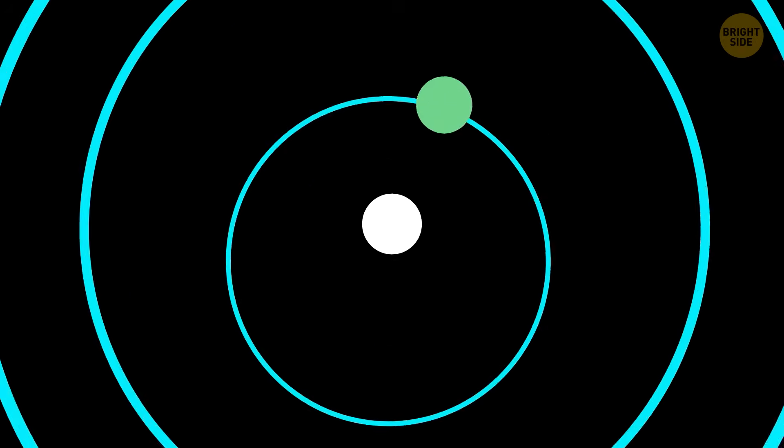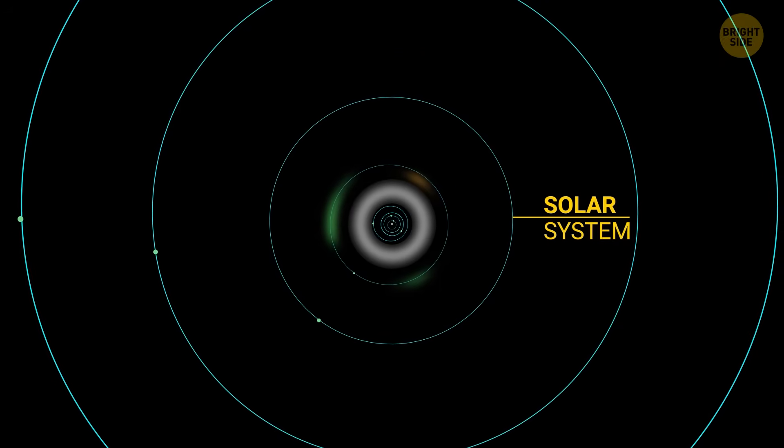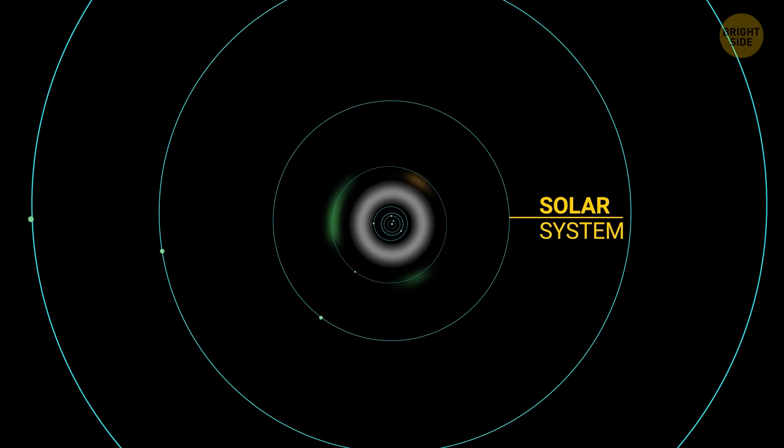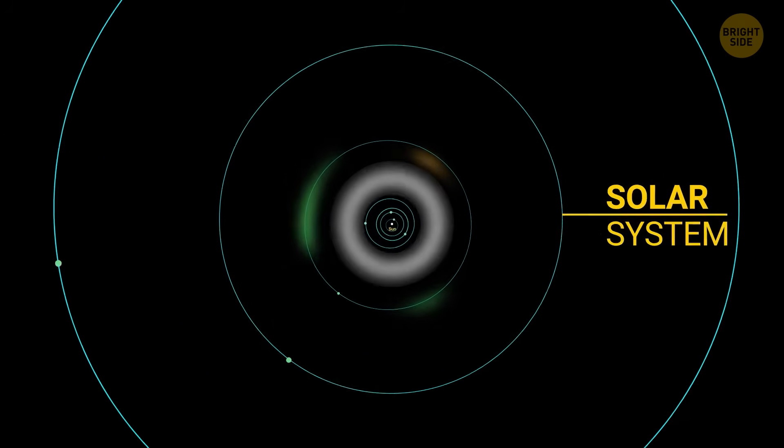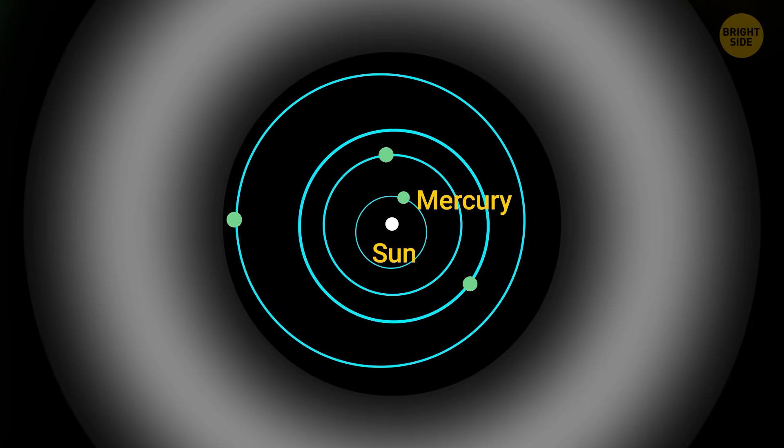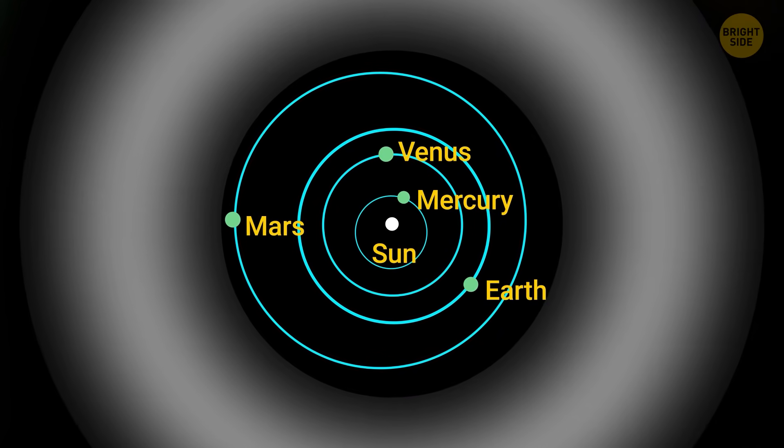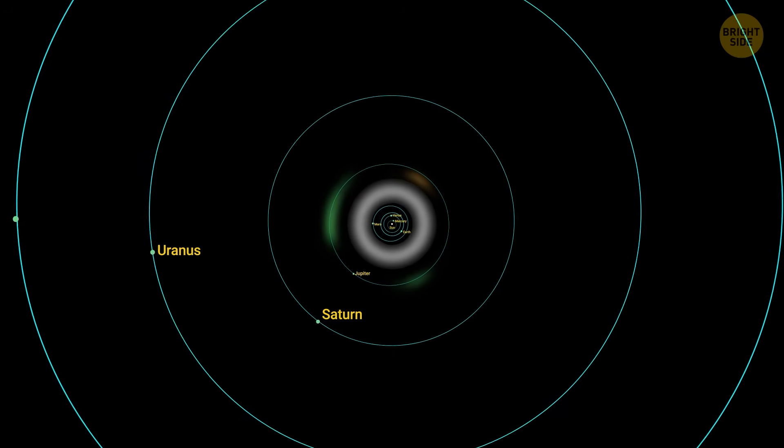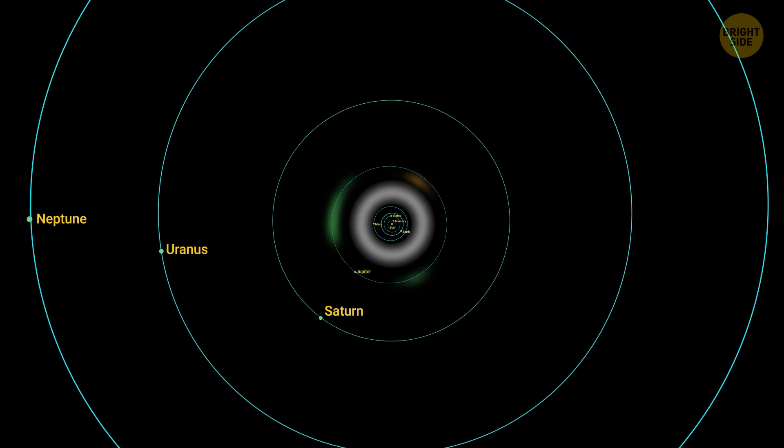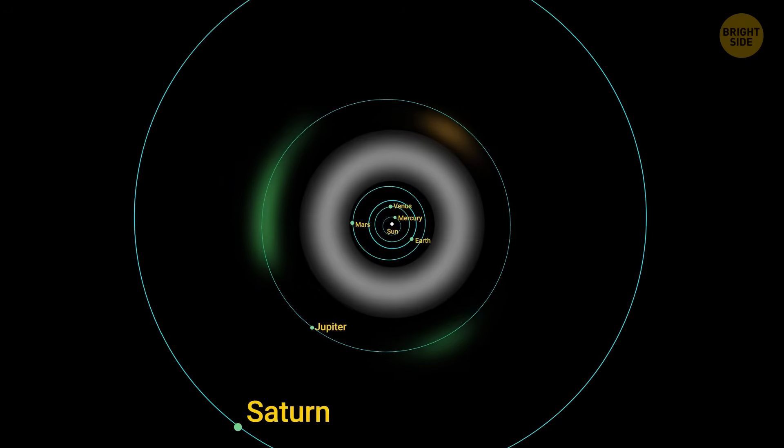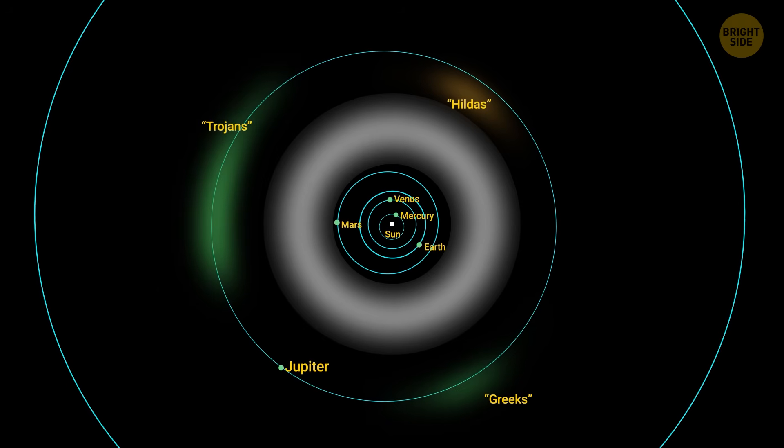Hear me out. Our solar system is made up of the Sun and everything that goes around it because of the star's strong gravity. This includes the eight main planets: Mercury, Venus, Earth, Mars, Jupiter, Saturn, Uranus, and Neptune. There are also smaller things like moons, asteroids, and Pluto.